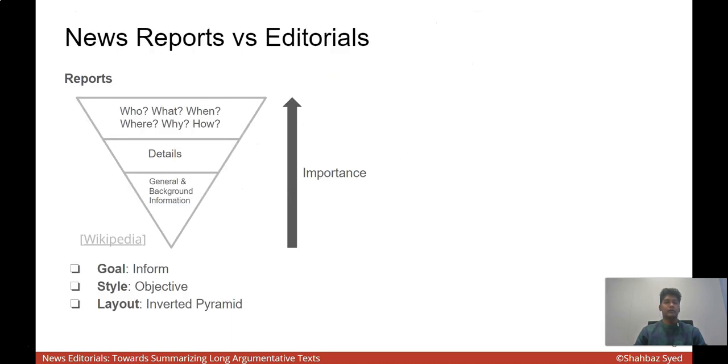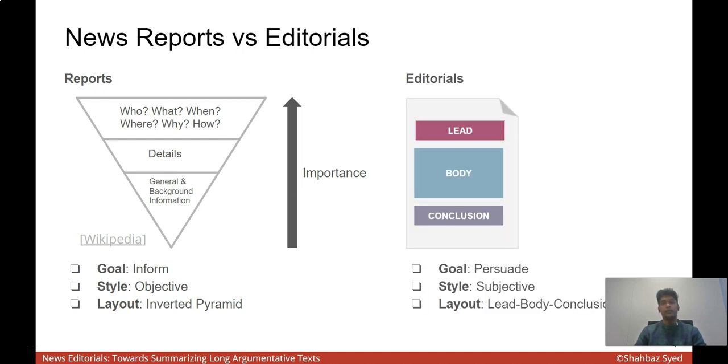Let us look at some differences between reports and editorials. The goal of a report is to inform you about the daily events. They are written objectively and mostly contain factual information that describes the event as it occurred. In terms of layout, reports follow an inverted pyramid layout, where the most important questions are answered in the top few sentences.